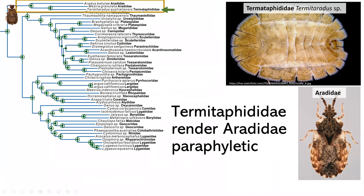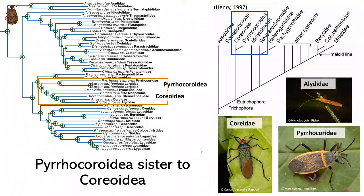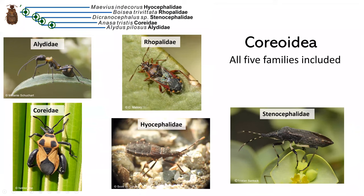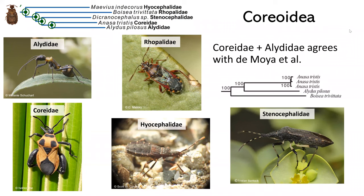You can see that Thaumastellidae is rendering Aradoidea paraphyletic. Then we have Piesoidea as sister to Coreoidea. We were excited to have included all five families of Coreoidea, and Choreididae and Alydidae placement agrees with DeMoya et al.